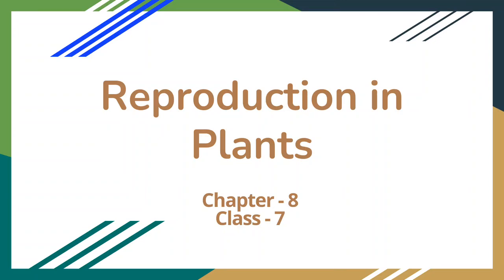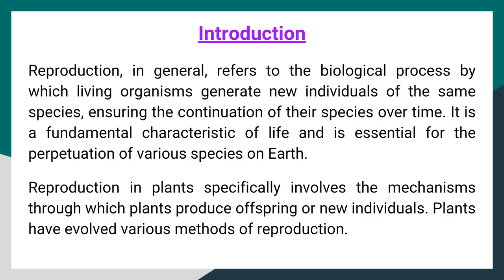Hello students, welcome back to my channel LinkedIn Pharma. Today we have discussed reproduction in plants, class 7, chapter 8. Introduction. Reproduction in general refers to the biological process by which living organisms generate new individuals of the same species, ensuring the continuation of their species over time. It is a fundamental characteristic of life and is essential for the perpetuation of various species on earth. Reproduction in plants specifically involves the mechanisms through which plants produce offspring or new individuals. Plants have evolved various methods of reproduction.